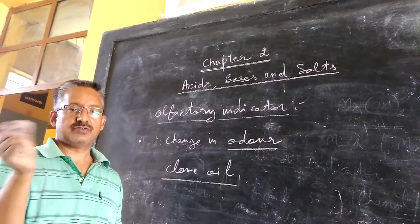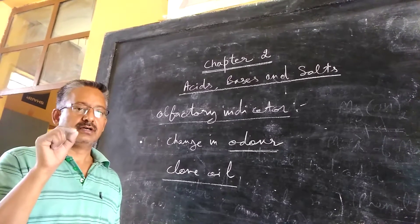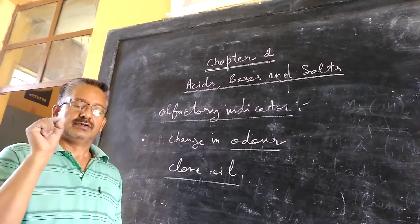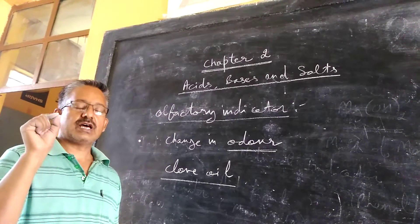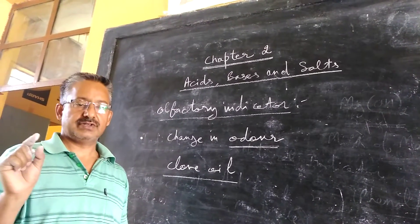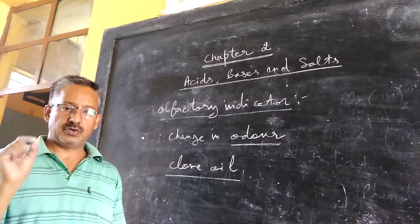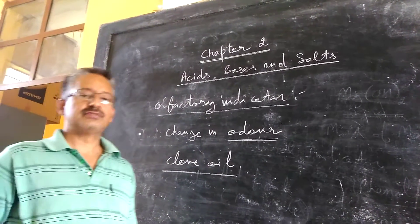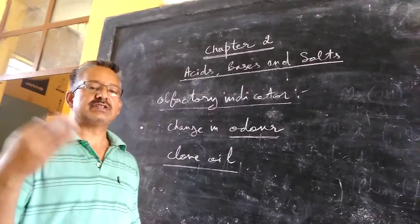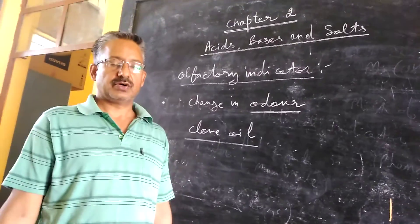Fourth thing: indicators are of two types—natural indicators and artificial indicators. Next thing we have learnt: what are olfactory indicators. So examples for these all things we have learnt. Now for today, in the beginning of the second chapter, this much is enough. Just go through this and then we will start next things. Okay, thank you.